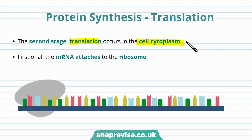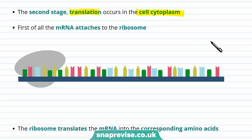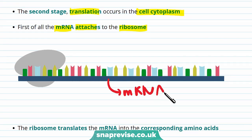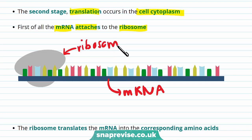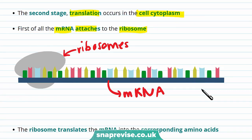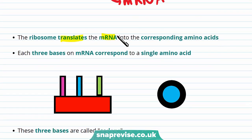So what are the different stages in translation? Well, first of all, mRNA attaches to the ribosome. This strand of mRNA is produced during transcription and it's complementary to the template strand of DNA. This means it carries all the information in DNA needed to make proteins. This information is then moved to the ribosomes, where the proteins are actually made, because the ribosome translates the mRNA into the corresponding amino acids.